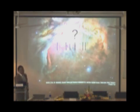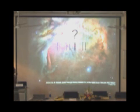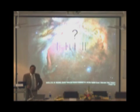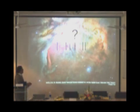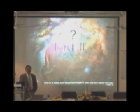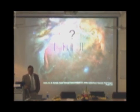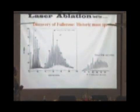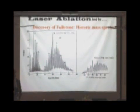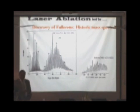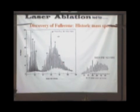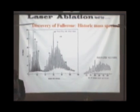From the interstellar dust, it was seen that there are some spectral lines which cannot be explained by the known elements. Theorists proposed that some of these lines might come from linear carbon chains. In order to understand this mystery, there was an attempt to make linear carbon chains by laser ablation of graphite, and that laser ablation led to the discovery of C60.